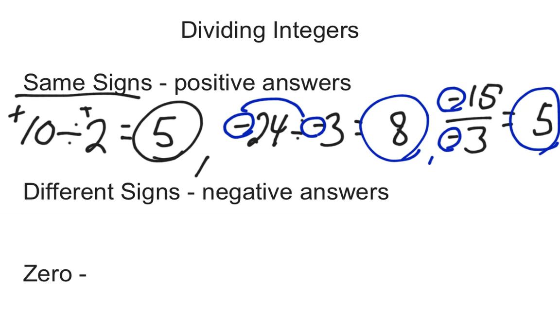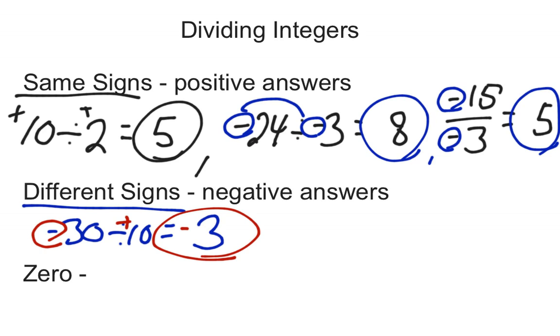Then on the other hand, if the same signs give us a positive answer, then different signs have to give us a negative answer. So if you do something like, well, let's do negative 30 divided by 10. Well, 30 divided by 10 is 3. And then again, since the signs are different, this is a negative 30, this is a positive 10, signs are different. We're going to get a negative answer. So I would get negative 3 there for that one.